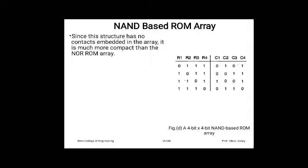Since this structure has no contacts embedded in the array, it is much more compact than the NOR ROM array. In the NOR based case a metal contact is needed because the depletion load connects to a column made of metal. In the NAND case, polysilicon connects directly without additional metal contacts, so the NAND based ROM array occupies lesser area.